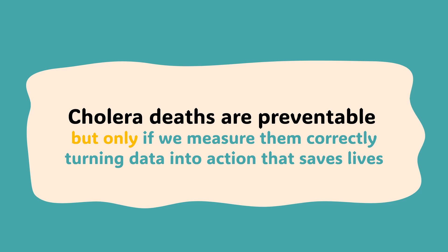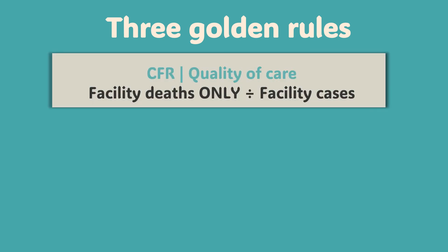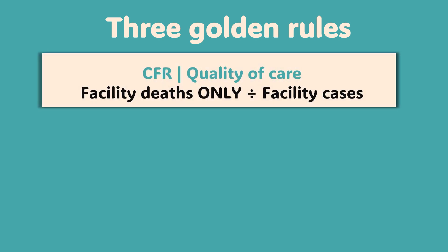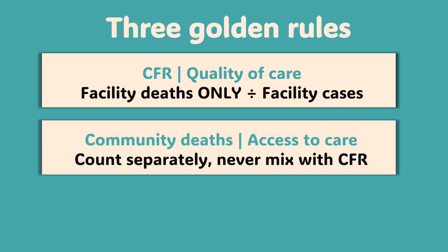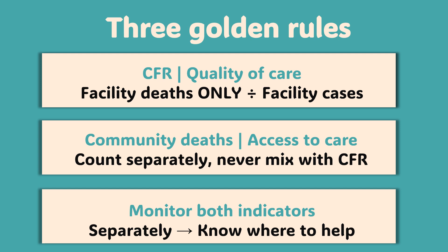Two different indicators, two different problems, two different solutions. If you only take away three things from this, let it be these. First, the case fatality ratio, the CFR, when calculated correctly, measures primarily quality of care — you only use data from health facilities: facility deaths divided by facility cases. Second, community deaths measure access to care and must be counted and reported separately — never include them in your CFR calculation. Third, monitor them both separately so you know where the real problem is and where to send help. The golden rule: never mix them.